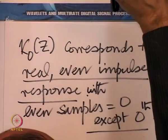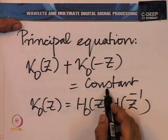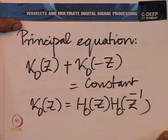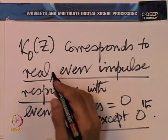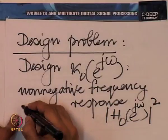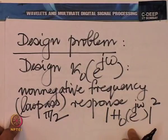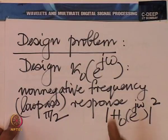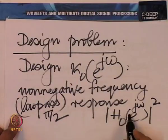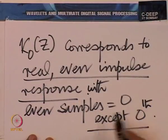The equation κ0(z) + κ0(-z) = constant essentially says the even samples other than the zero sample are all zero. So you are trying to design a non-negative low pass frequency response with a cutoff of π/2. The design problem is now very clear: design an even impulse response aspiring to be a low pass filter with cutoff π/2, non-negative, with the constraint that even samples of the impulse response are zero except for the zero sample.